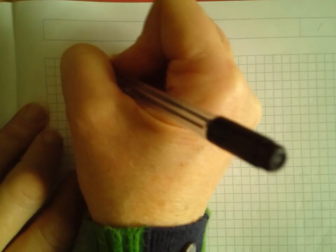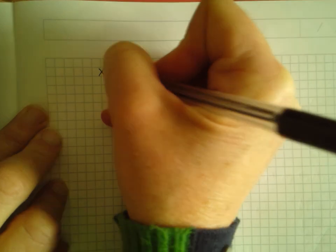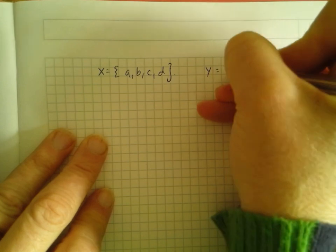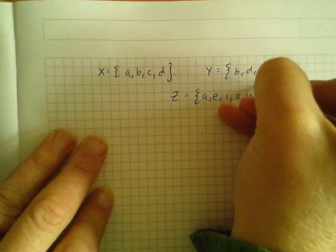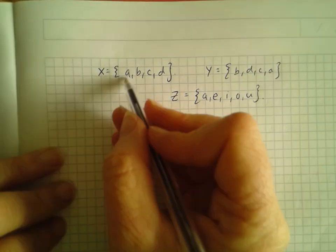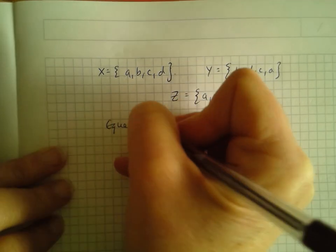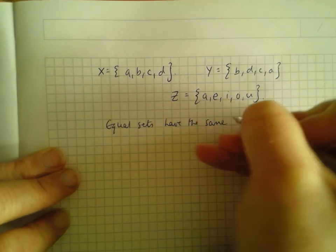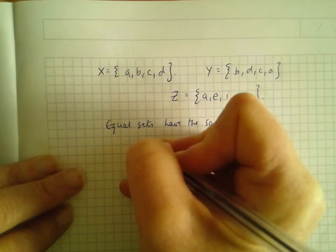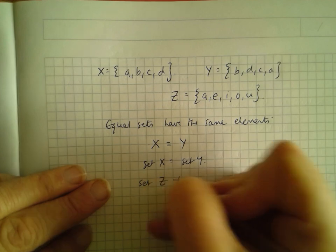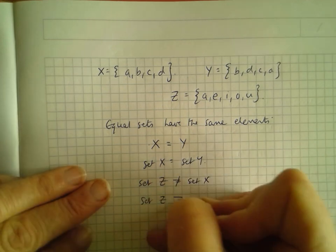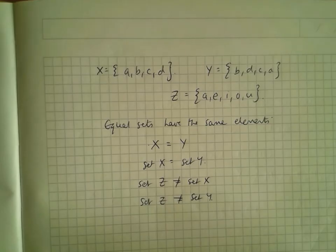Now let's talk about equal sets and subsets. If I list three sets: X = {A, B, C, D}, Y = {B, D, C, A}, and Z = {A, E, I, O, U}. Set X and set Y have the same elements, just in a different order — and order doesn't matter. So equal sets have the same elements, meaning set X equals set Y. Set Z is not equal to set X or set Y because they don't have the same elements.